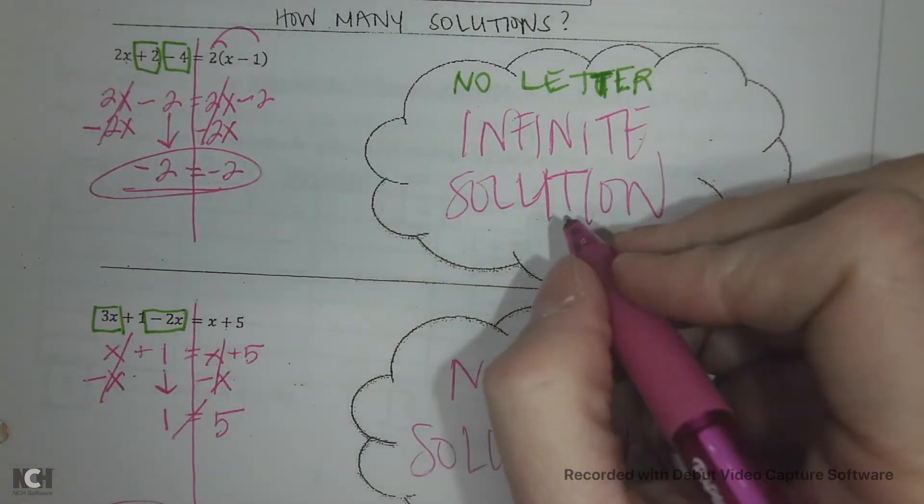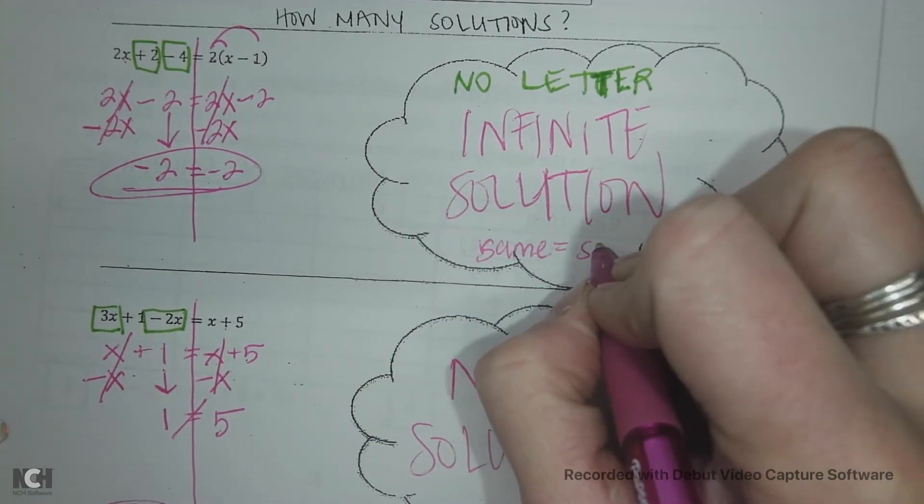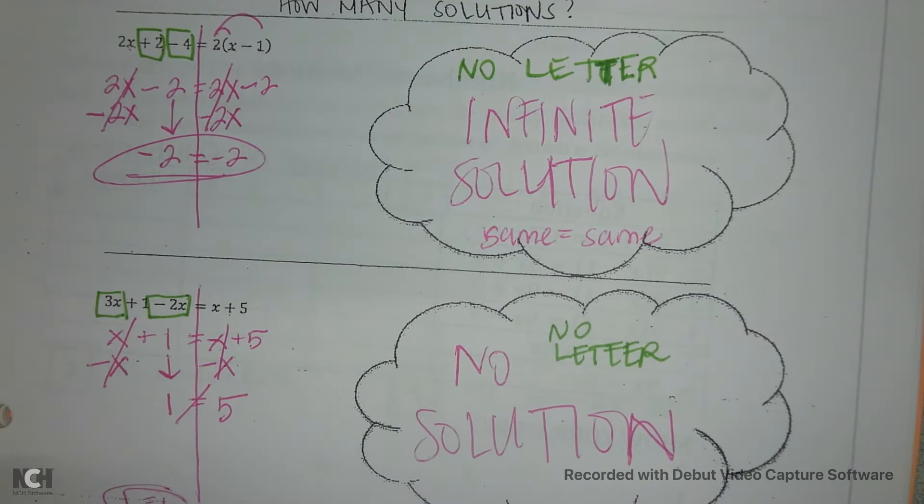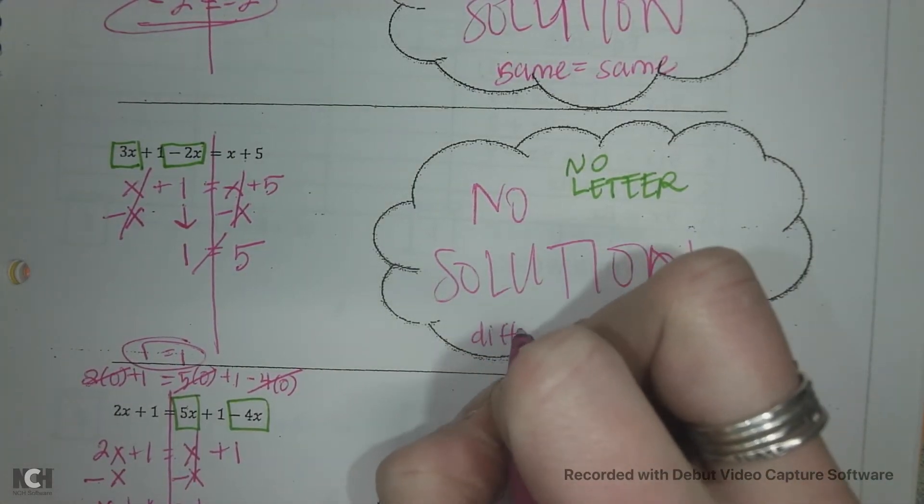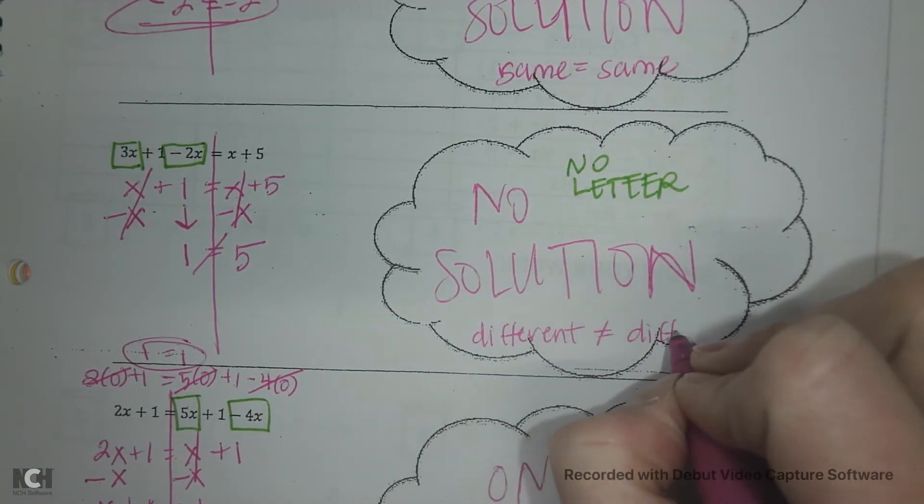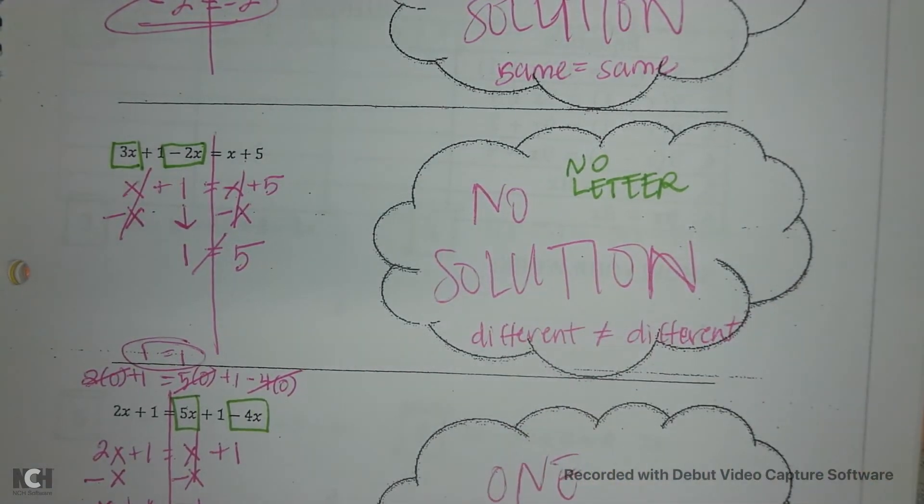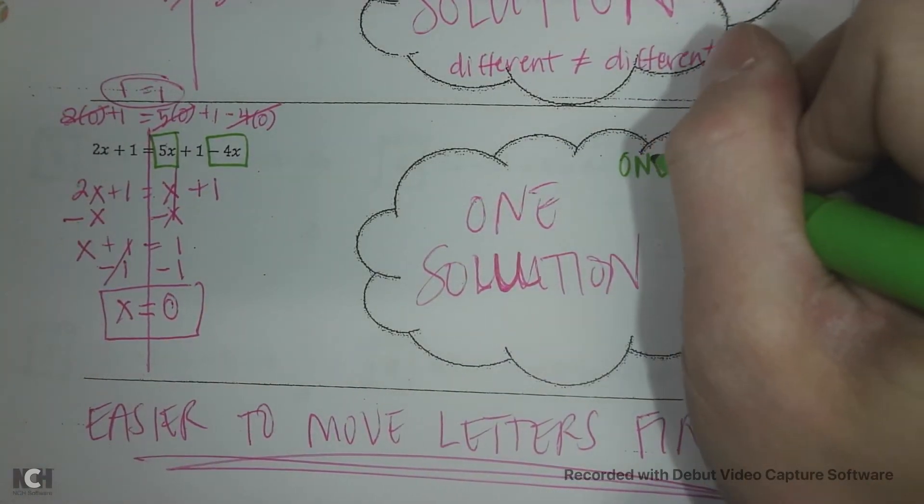And the infinite solution, the left side and the right side are the same. So same equals same. On the no solution, they're both different. Different does not equal different. And then on the one solution, you have one letter.